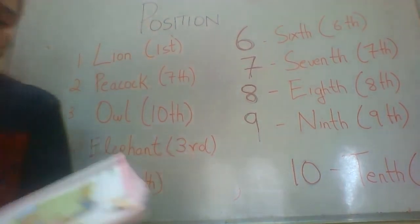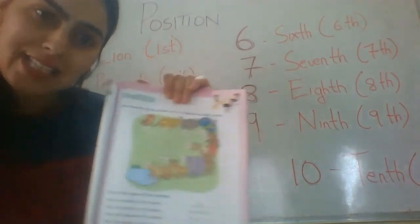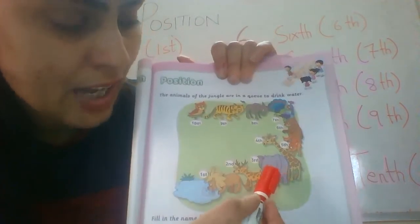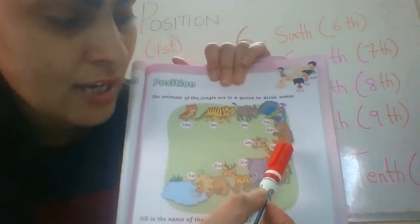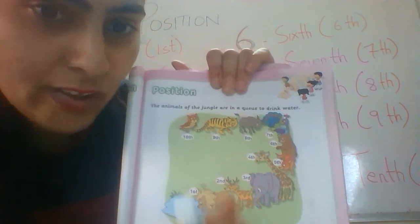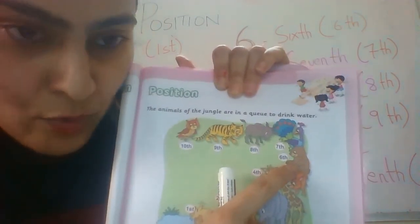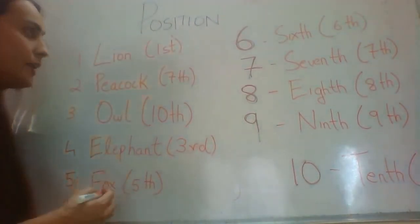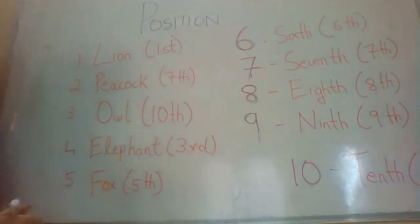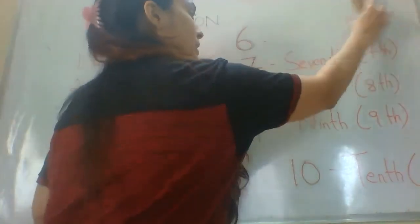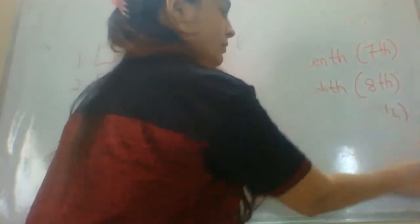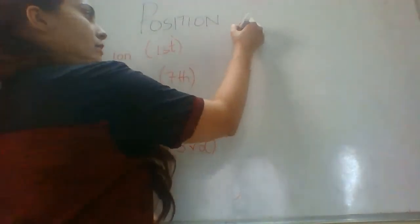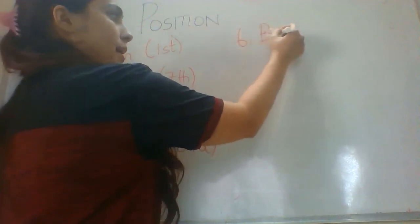The sixth question asks: what is the sixth animal in the queue? Counting: lion first, then deer, then elephant, then giraffe, then fox, and at the sixth position there is a bear. So we will write bear at number six.